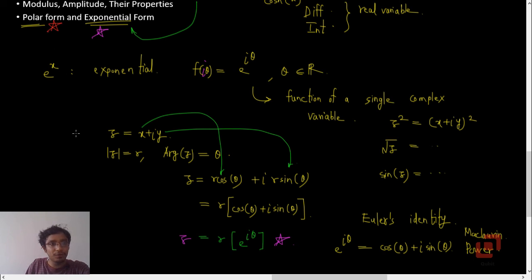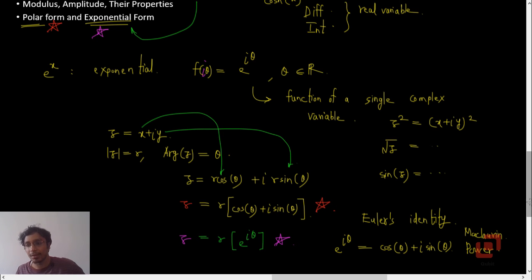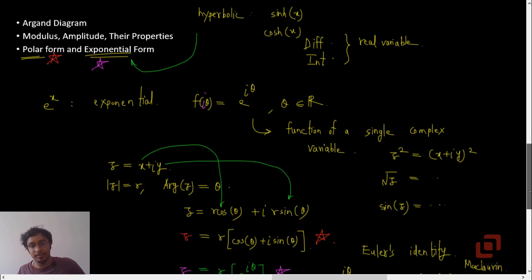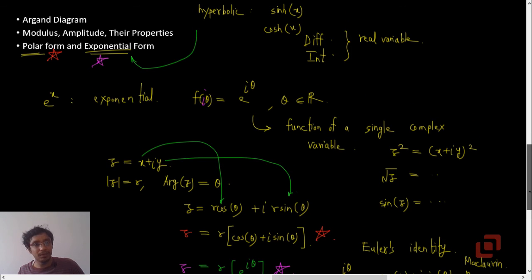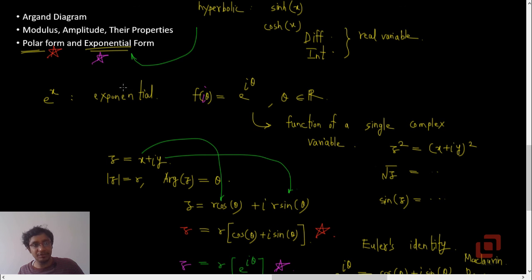The polar form of the complex number z equals x plus i y is z equals r times (cos theta plus i sin theta), and the exponential form is z equals r e to the power i theta. That completes polar form and exponential form; we have already talked about the modulus and the amplitude.